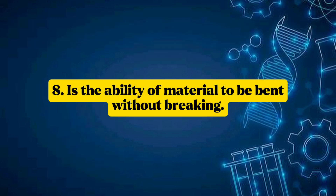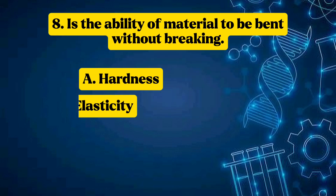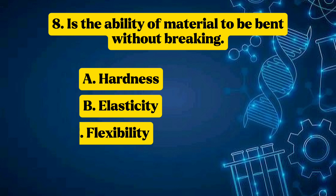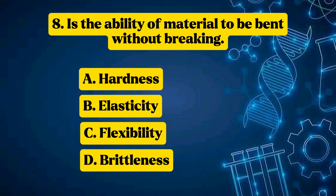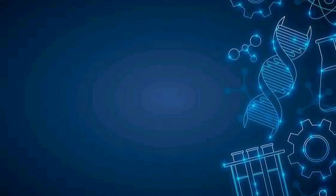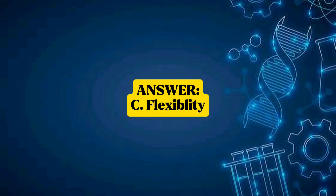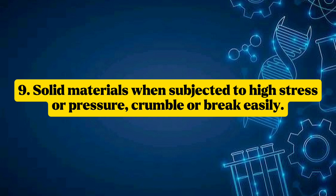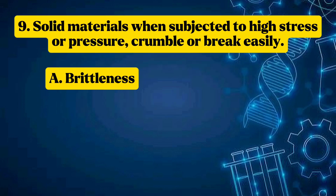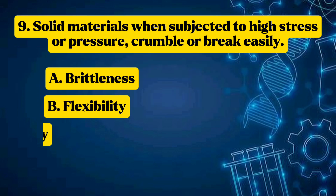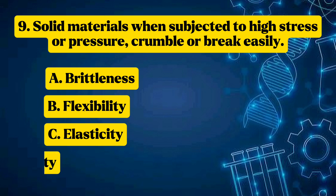Question 8: It is the ability of a material to be bent without breaking. Options: A — hardness, B — elasticity, C — flexibility, D — brittleness. Answer: C — Flexibility. Question 9: Solid materials when subjected to high stress or pressure crumble or break easily. Options: A — brittleness, B — flexibility, C — elasticity, D — porosity. Answer: A — Brittleness.